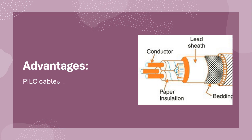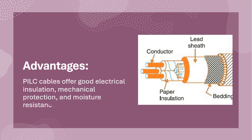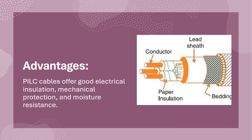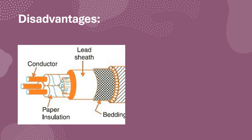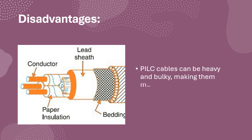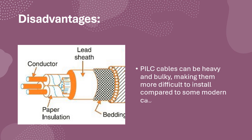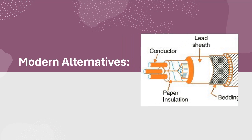Advantages: PILC cables offer good electrical insulation, mechanical protection, and moisture resistance. Disadvantages: PILC cables can be heavy and bulky, making them more difficult to install compared to some modern cable types.